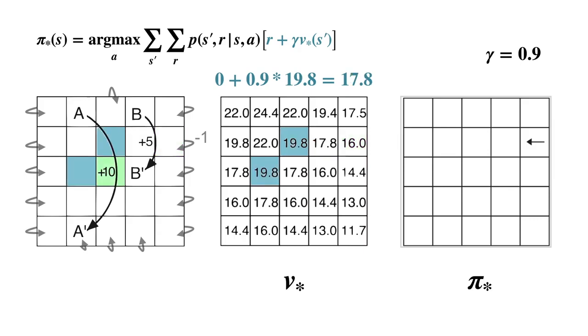Let's look at another example. In this state, two different actions, up and left, each give the same optimal value of 0.9 times 19.8, which equals 17.8. Thus, in this state, there are two different optimal actions, and an optimal policy is free to pick either with some probability.